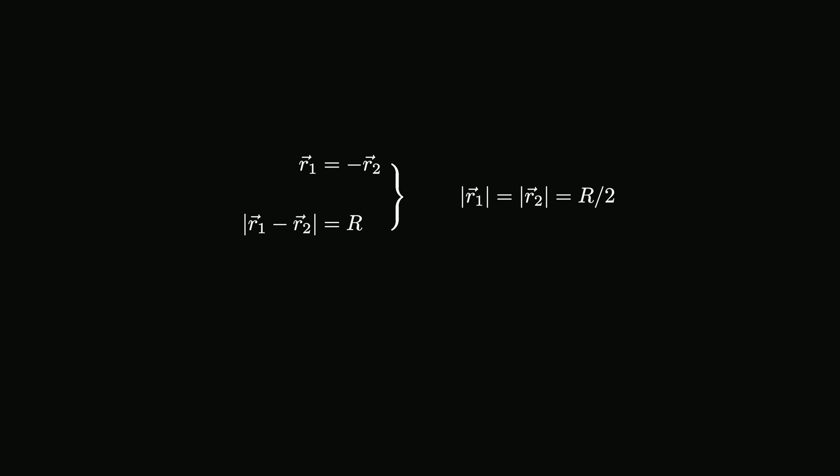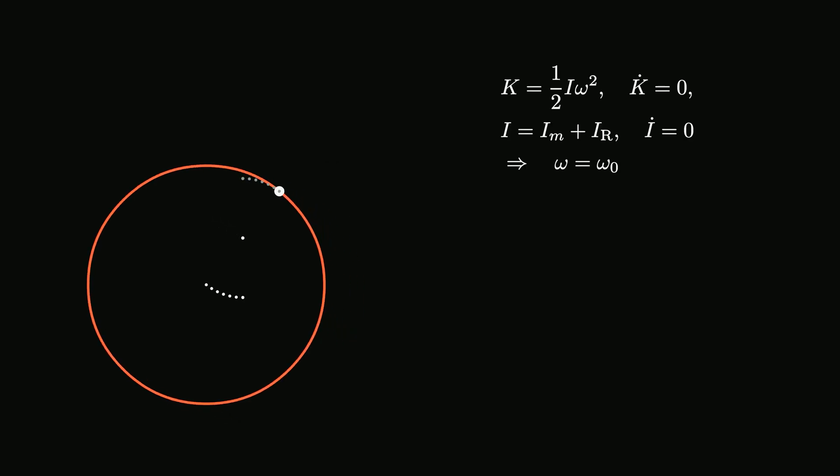This means both objects rotate around the center of mass of the system in the center of mass frame. Therefore, the point mass and the center of the ring move on the same circle with a common angular velocity.